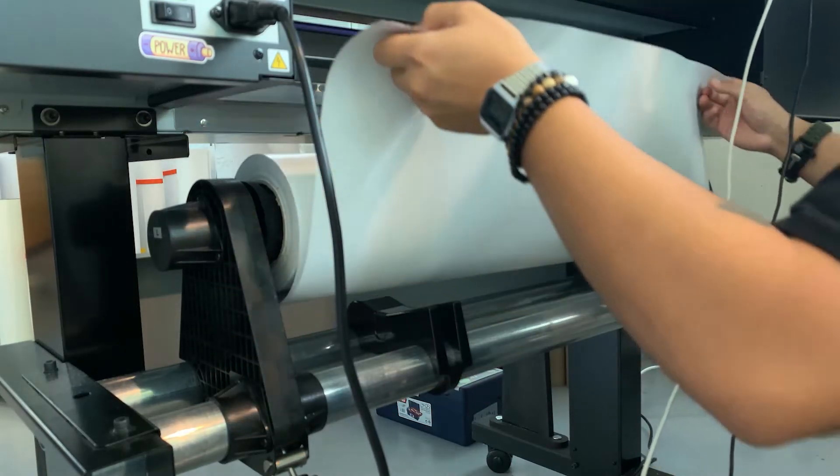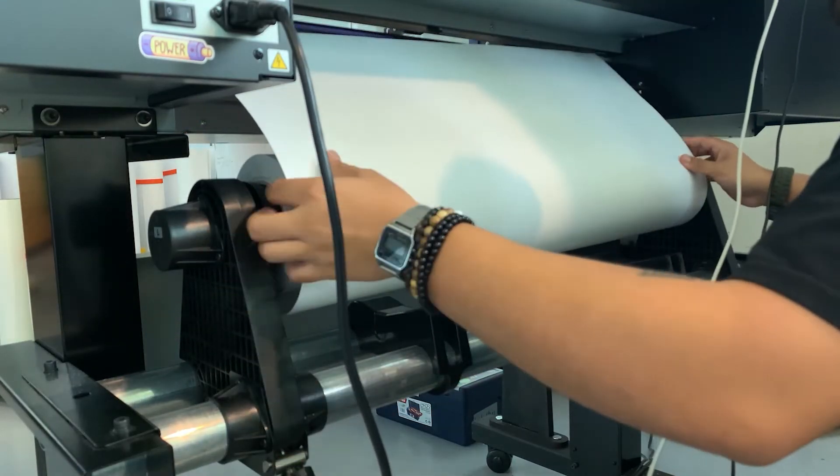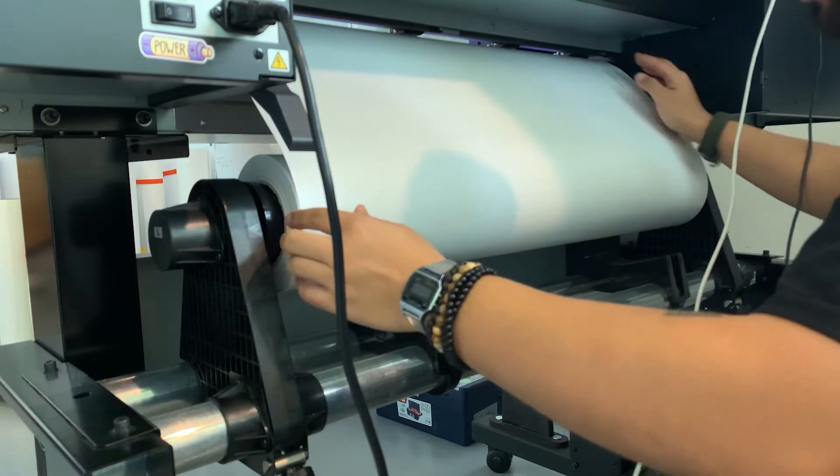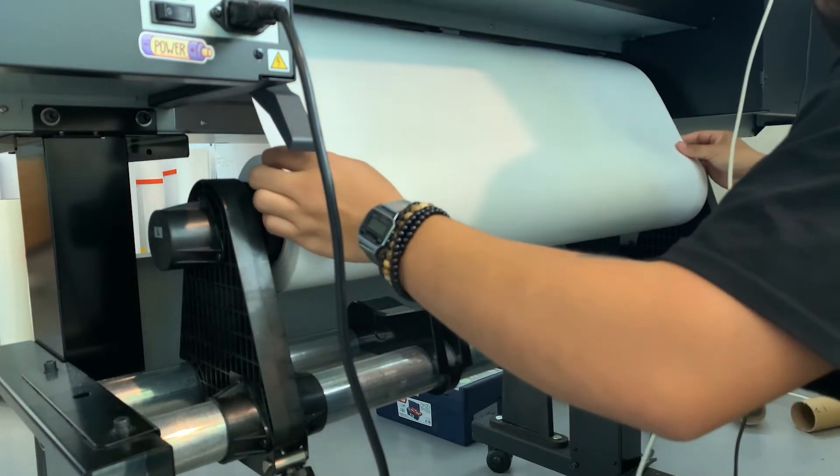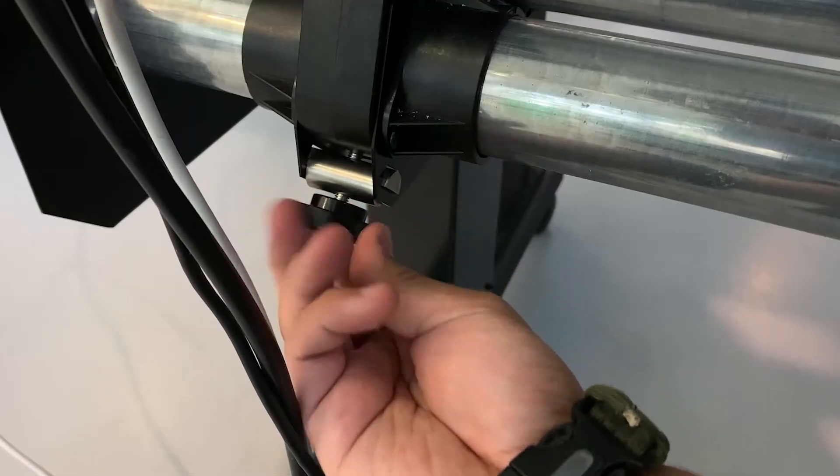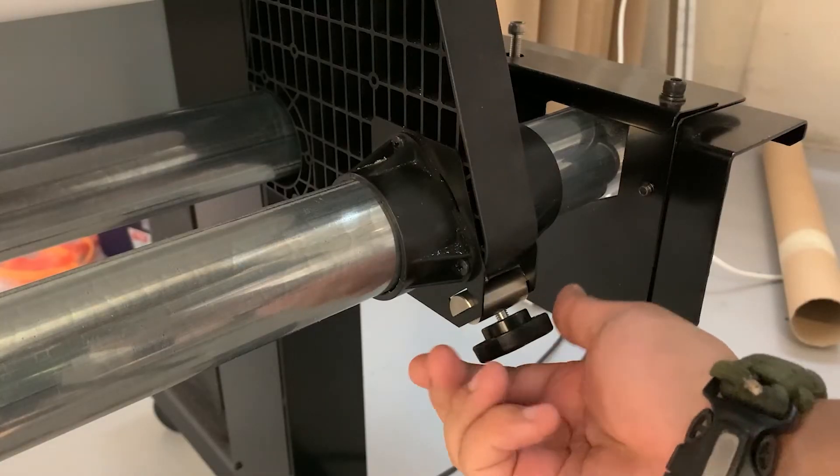Pull the vinyl into the machine and make sure that the roll is set straight. Pull down the side lever on the left to lock the vinyl in. Tighten the screws once the material is set in properly.